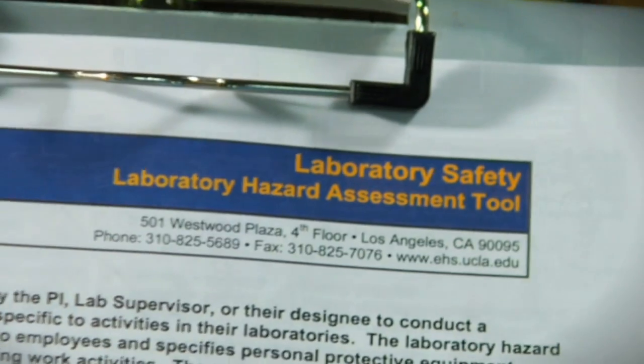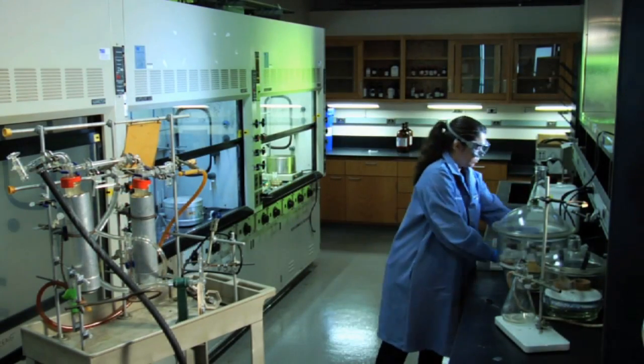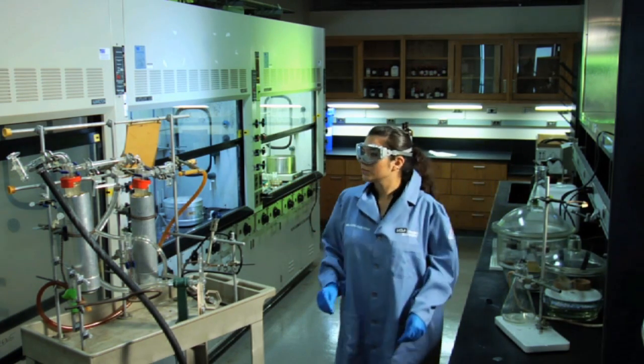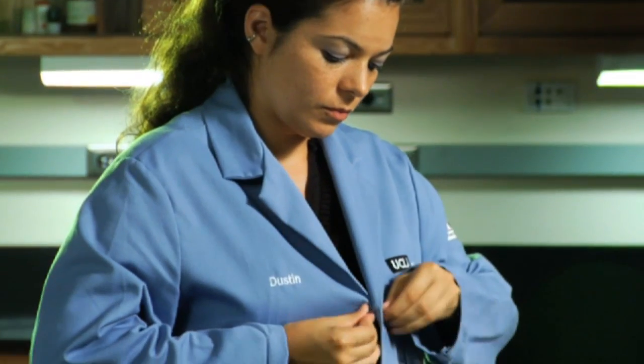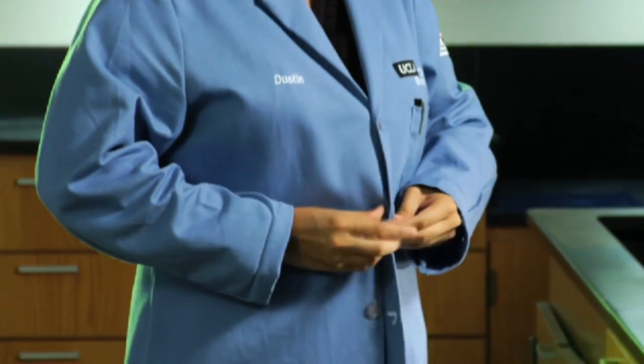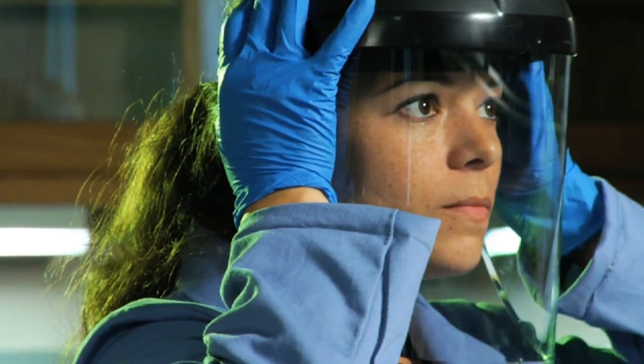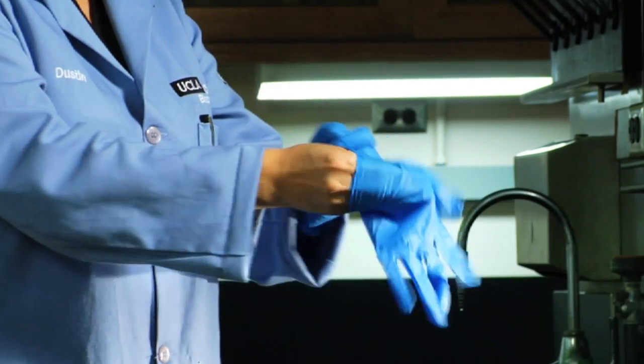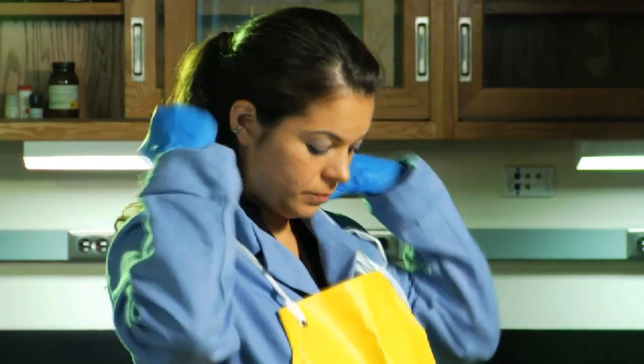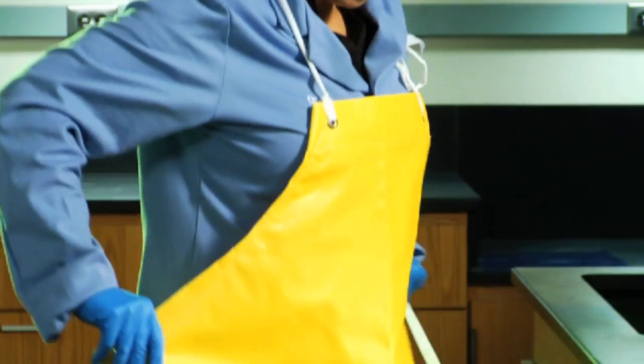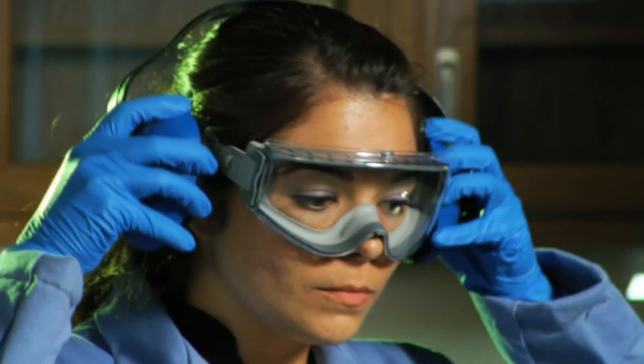Utilize the EH&S Laboratory Hazard Assessment Tool to identify the PPE that corresponds to hazards associated with your particular work area. Always wear the proper PPE for the work you are doing. Laboratory PPE includes a properly fitting lab coat. For some procedures, a fire-resistant lab coat may be necessary. Face and or eye protection. Gloves of the correct size and type for the hazard involved. A chemically-resistant apron when necessary. Other lab or hazard-specific PPE items may be necessary, such as respiratory or hearing protection.